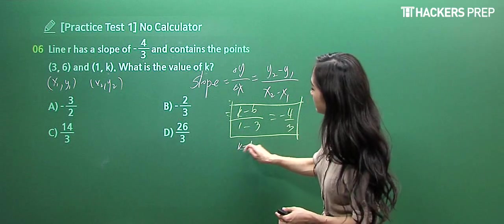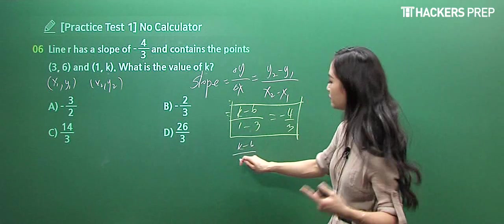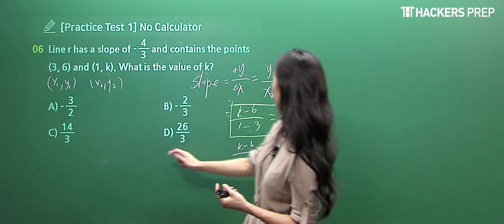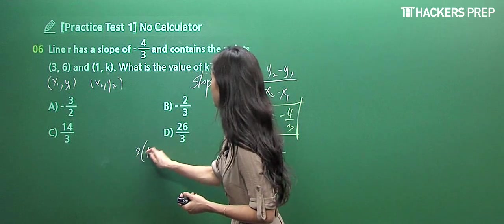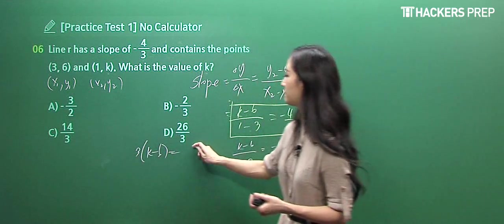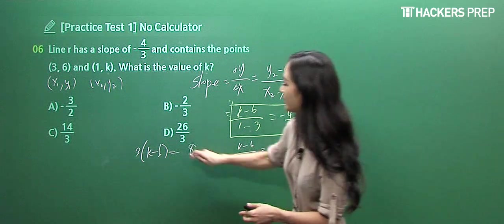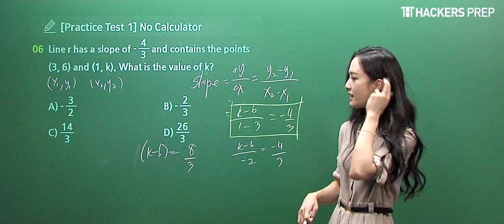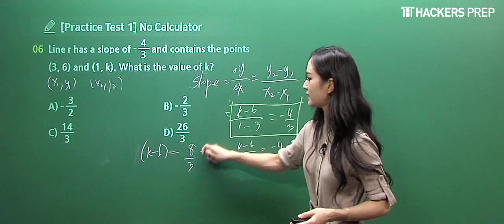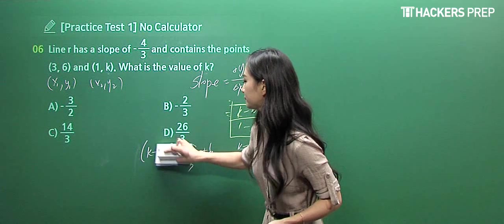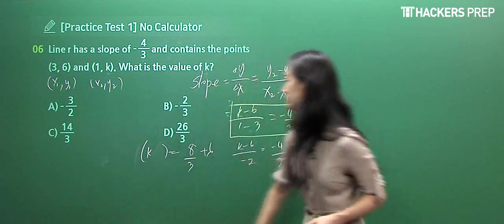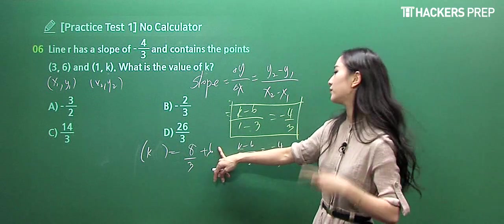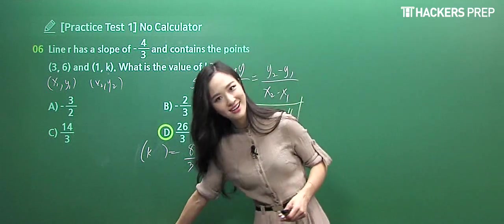When you simplify, we have (k - 6)/(-2) = -4/3. You do cross multiplication, so 3(k - 6) = 8. Divide by 3 on both sides, then add 6 to both sides. This gives you the k value. You can do this without a calculator by matching the common denominator: 18/3, and you get a match.